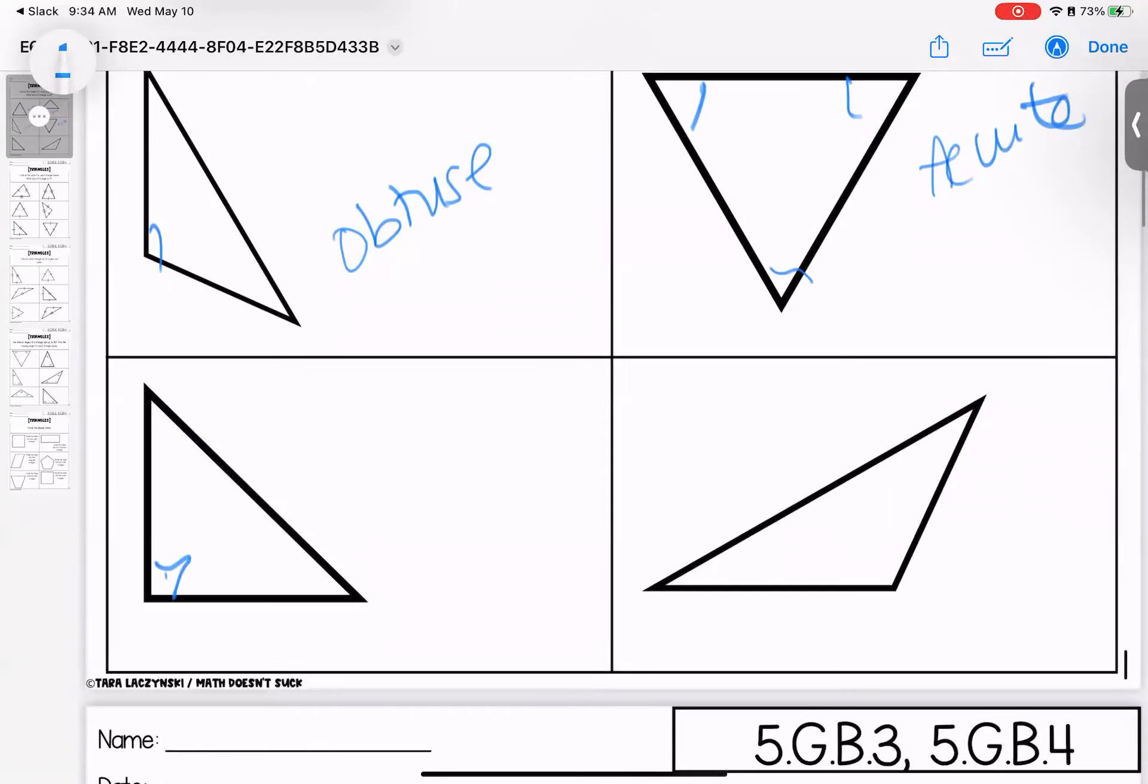Down here, we have one right. And this last one, one obtuse. Questions on naming angles, please bring them with you to class. But remember, you also have your triangle book that's helping you with the classifications.